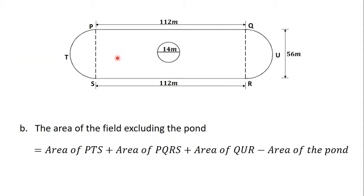The area of the field excluding the pond is going to be: area of the semicircle PTS, plus area of the rectangle PKRS, plus area of the semicircle KUR. Since the question says to find the area excluding the pond, we subtract the area of the pond. So it's the area of the two semicircles plus the area of the rectangle, minus the area of the pond. Remember the pond is a circular pond with a diameter of 14 meters.